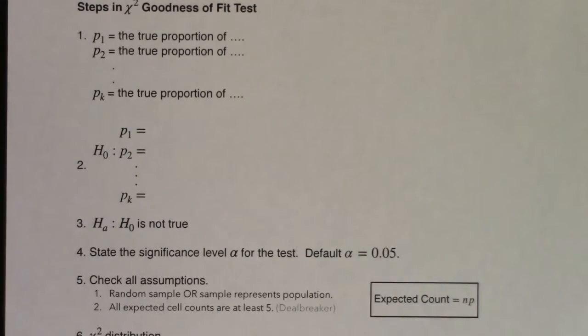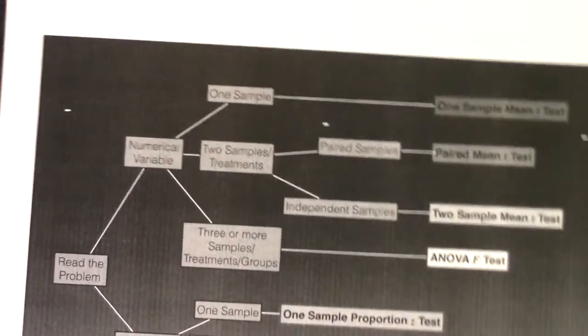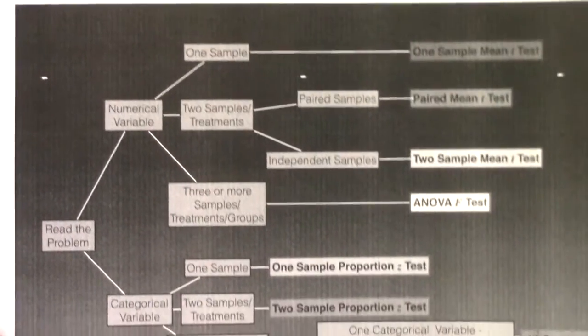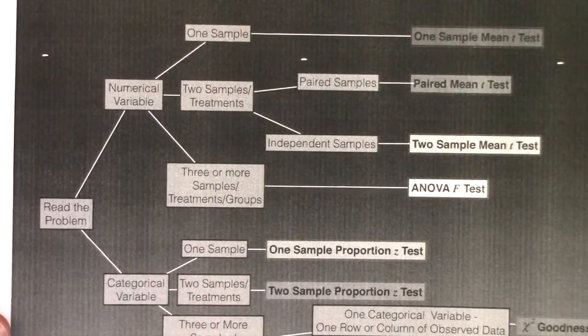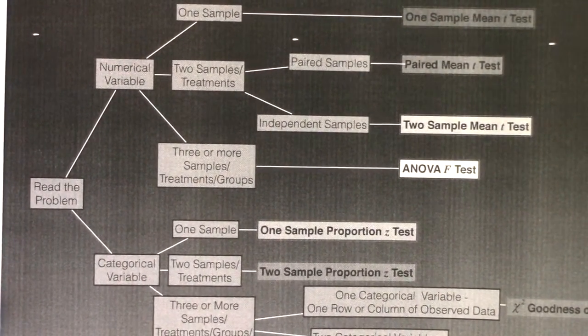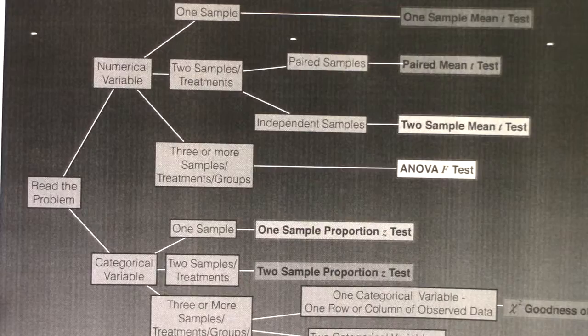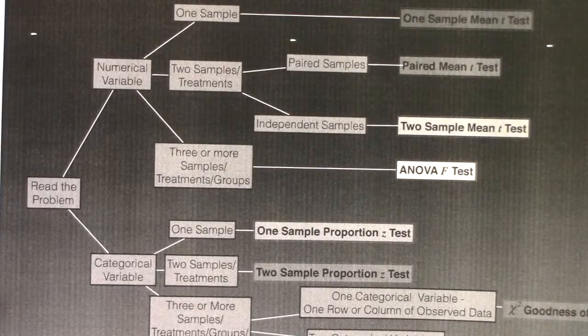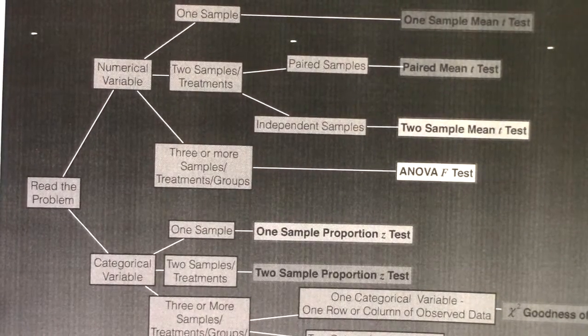We also talked about the flowchart you could use, and this is in combination for all of the chapters from chapters 9 through 13, in terms of how to figure out which hypothesis test you're going to run.